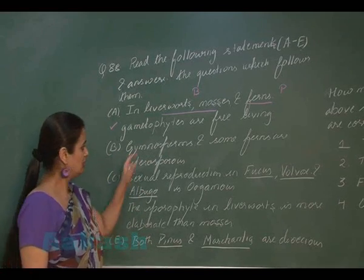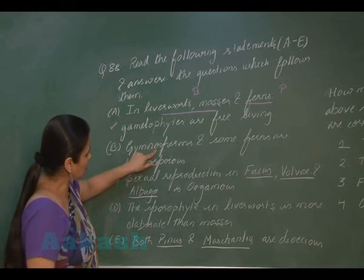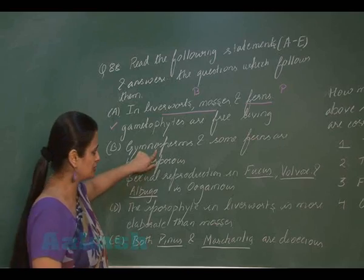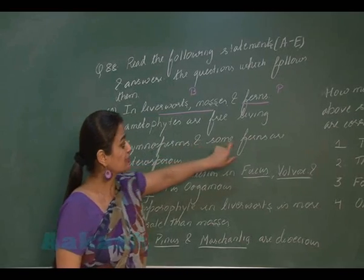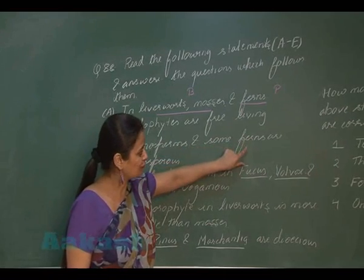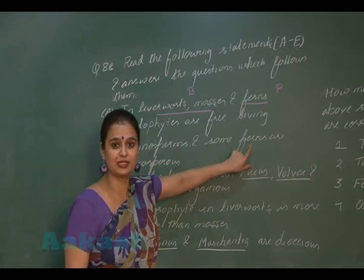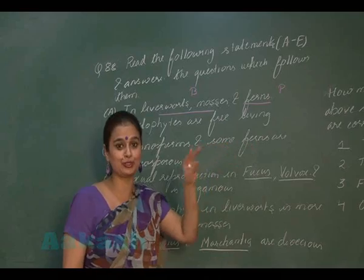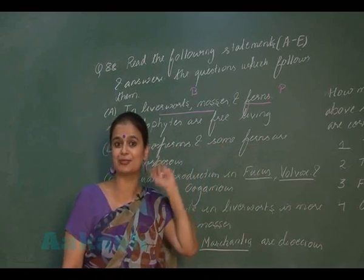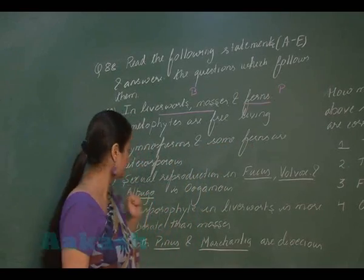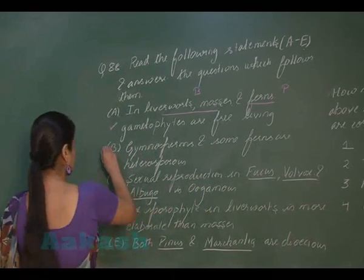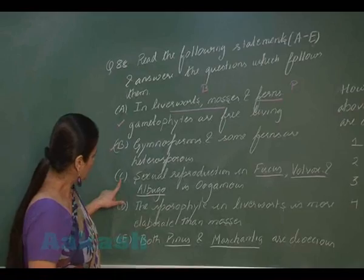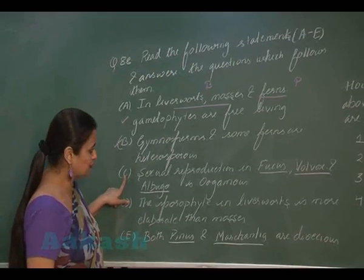Option B: all gymnosperms are heterosporous, and some pteridophytes (some ferns) are also heterosporous, producing two types of spores. So this option is also correct.